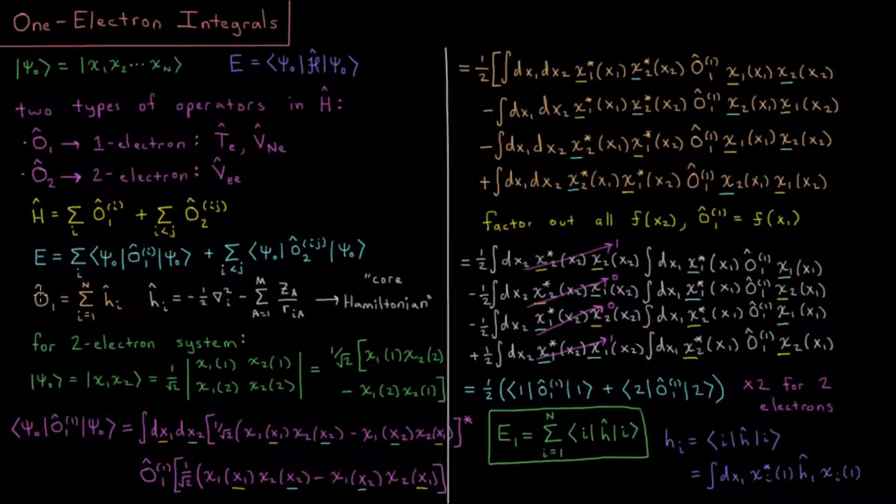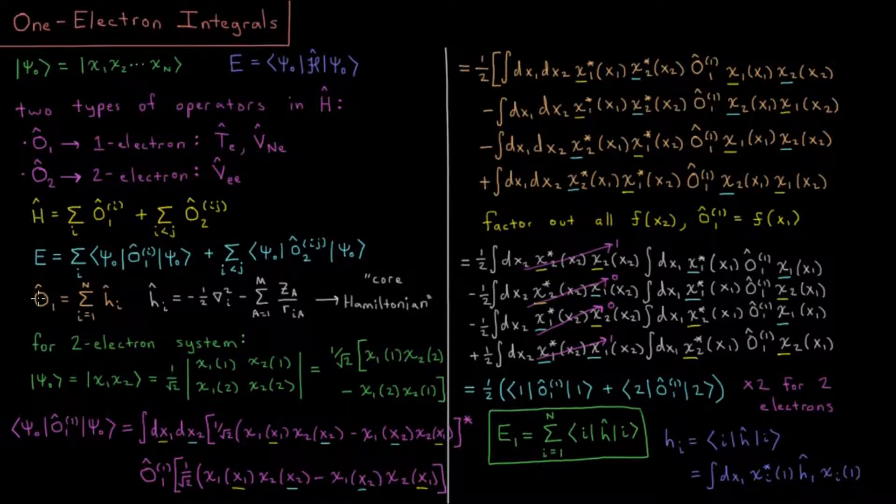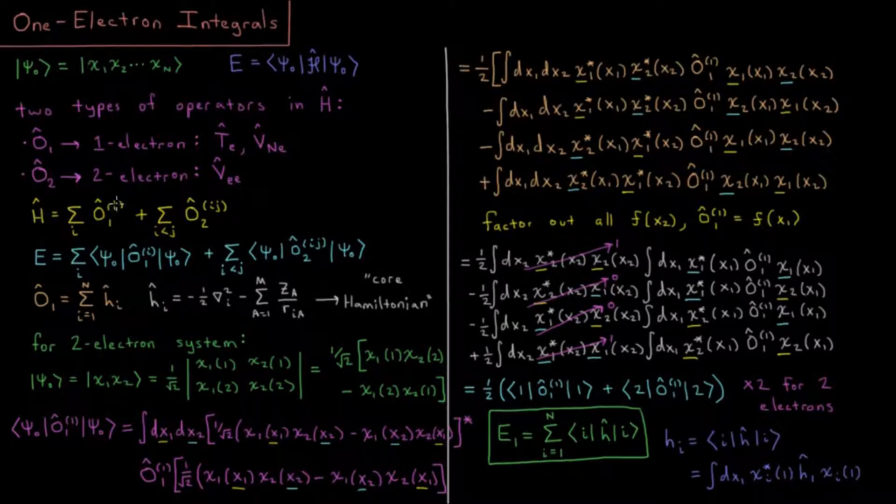What are our one-electron operators? These are going to be all of the one-electron operators. If I drop the i subscript and just indicate all of them, that would be this whole sum here.